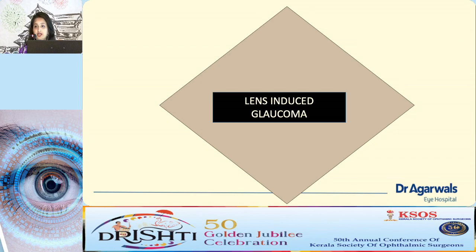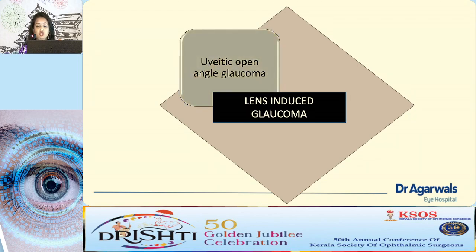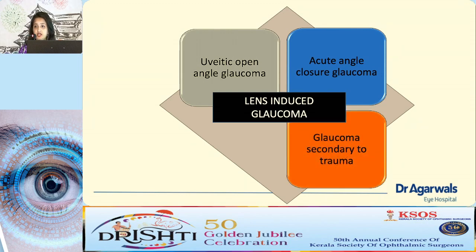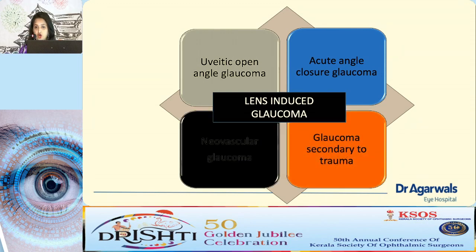Once lens-induced glaucoma is suspected, other causes of raised IOP should be excluded: uveitic open-angle glaucoma — keratic precipitates will be present; acute angle-closure glaucoma; glaucoma secondary to trauma — history aids diagnosis; and neovascular glaucoma — where new vessels are seen in the iris or at the angle.